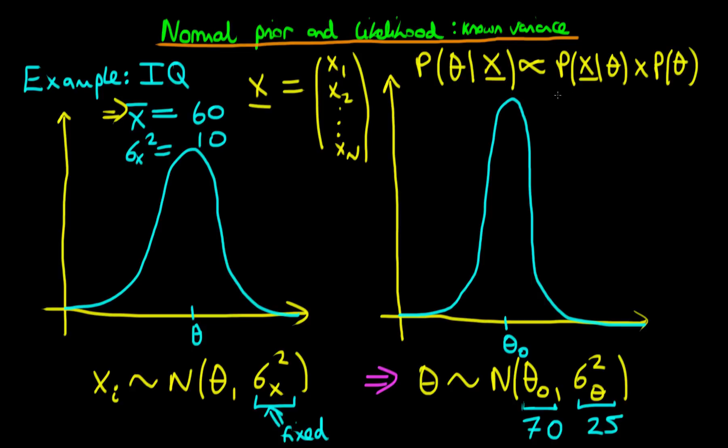What we're going to show over the next few videos is that if we have a normal likelihood and a normal prior density, then it happens to be the case that we're going to prove that the posterior density is also normal. And we're going to find both the posterior mean, which I'm just going to call here theta dash, and the posterior variance, which I'm just going to call here sigma squared theta prime.